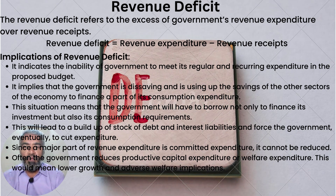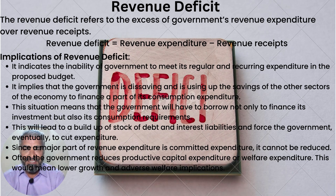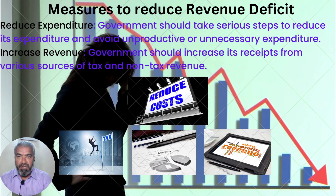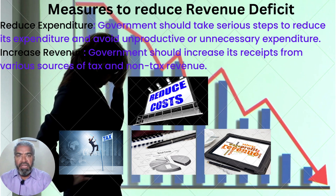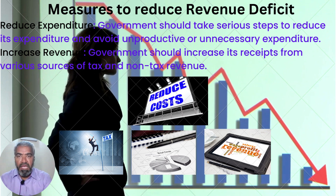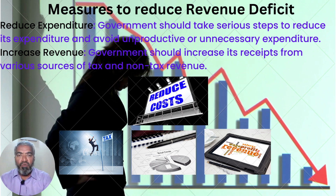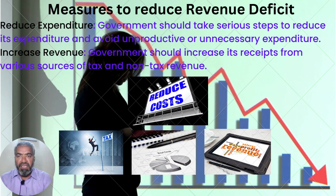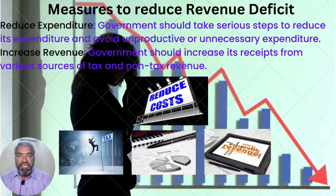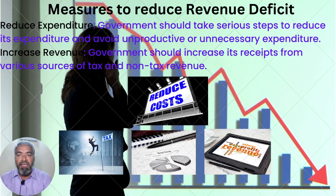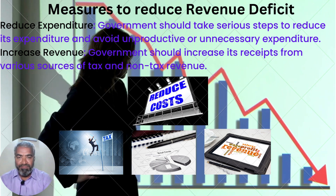This would mean lower growth and adverse welfare implications. Measures to reduce revenue deficit: first, the government should take serious steps to reduce its expenditure and avoid unproductive or unnecessary expenditure. Second, the government should increase its receipts from various sources of tax and non-tax revenue.